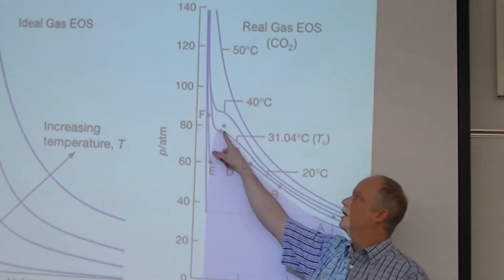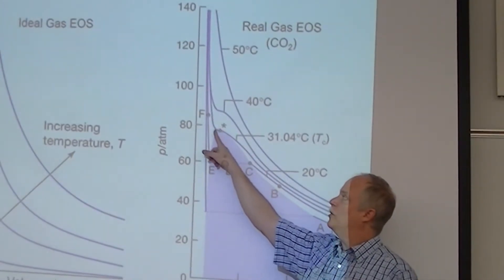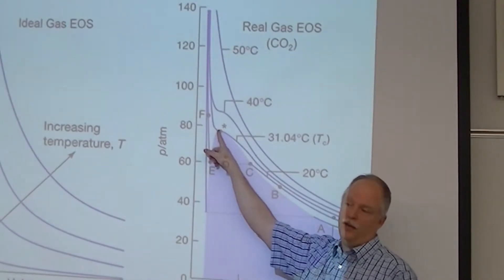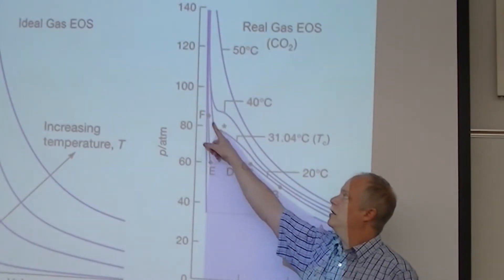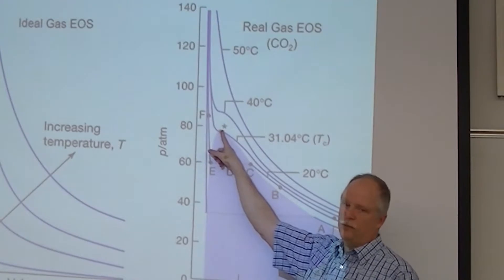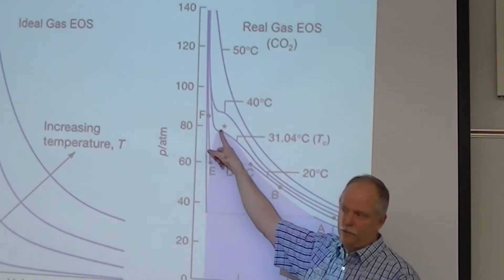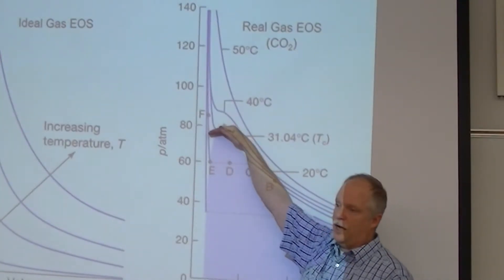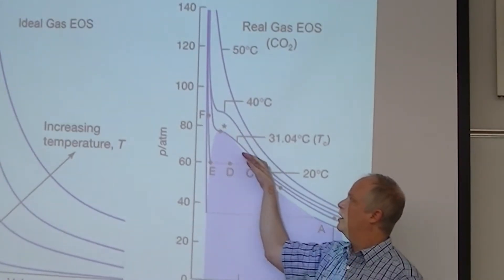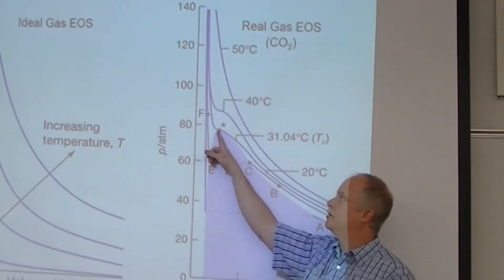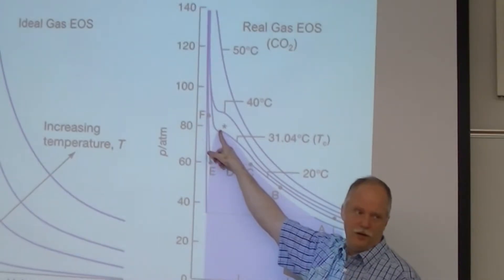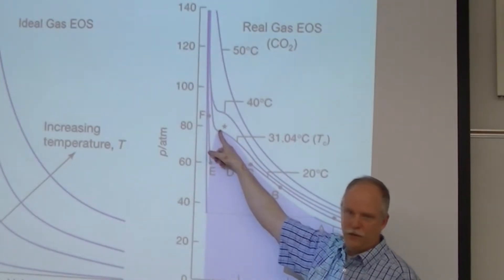So the isotherm is no longer just this inverse relationship of pressure and volume. There's this strange little wiggle here. And right here, that wiggle actually goes flat. So the slope of that line is zero. And the curvature of that line is zero. So the isotherm has a spot, a critical point, and it's in this equation, like using the terms of calculus, it's a critical point where the slope has gone to zero and the curvature has gone to zero.